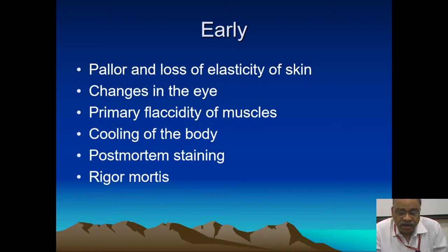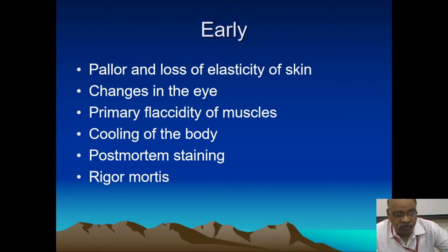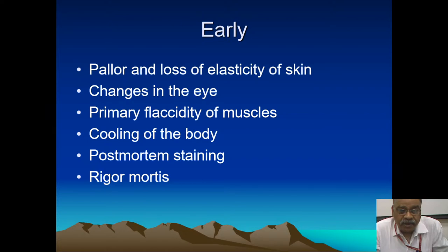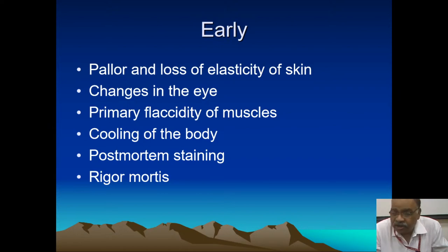On the basis of corneal transparency, eye donation is practiced. For 4 to 6 hours, or maximum up to 24 hours, the cornea may be used for transplantation purposes under the Human Organ Transplantation Act. When the eyes are open, there is deposition of debris on the sclera — initially it is a streak-like thing, then dust is deposited on it and it becomes more prominent.